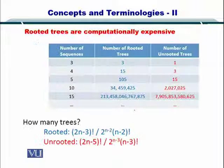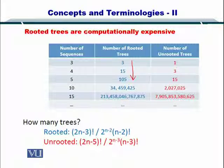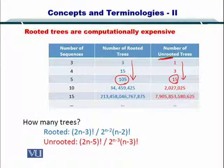Rooted trees are computationally expensive. As you increase the number of sequences, as shown in this table, the number of rooted trees increases very fast, while the number of unrooted trees does not increase as much. So essentially, if you want to compute the phylogenetic tree and have low computing power, you may want to go with unrooted trees, though they have their own disadvantages as well.